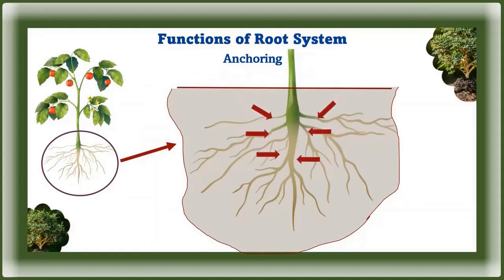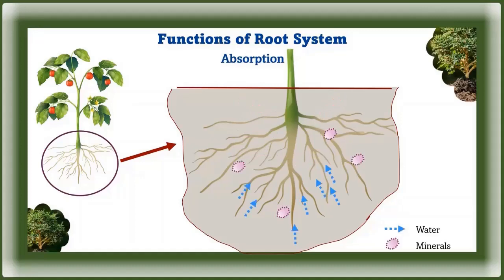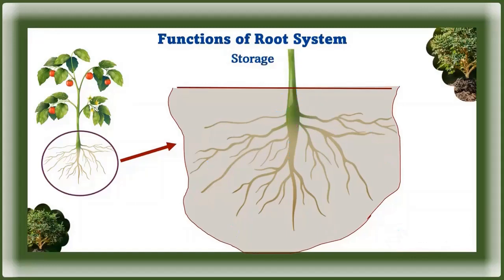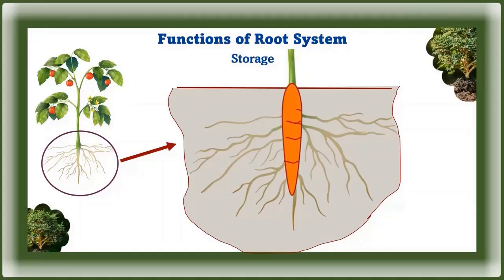Functions of roots: Anchoring — roots are the reason plants remain attached to the ground; they support the plant body ensuring it stands erect. Absorption — the primary function of roots is to absorb water and dissolved minerals from the soil, which is crucial for photosynthesis. Storage — plants prepare food and store it in the form of starch in leaves, shoots, and roots.